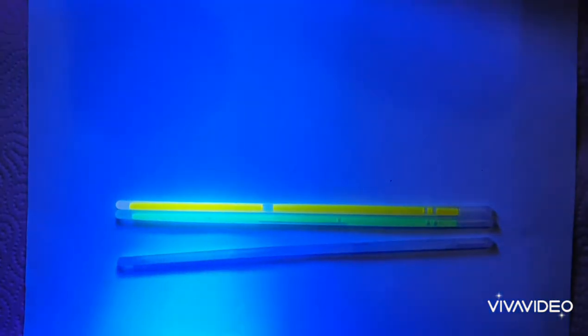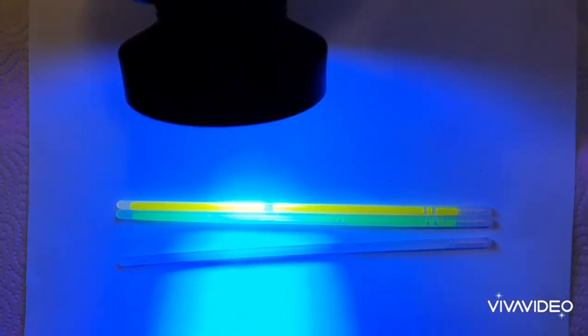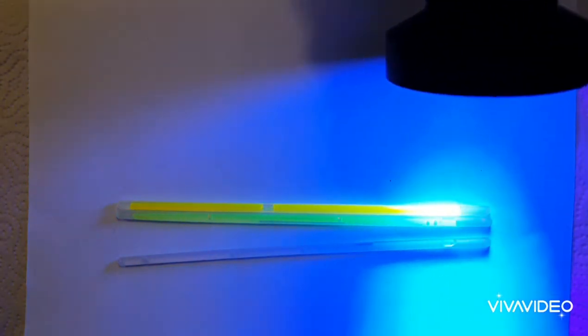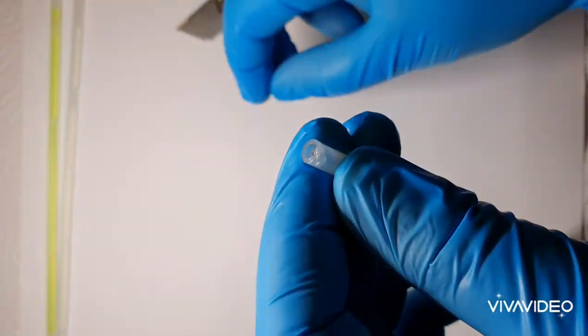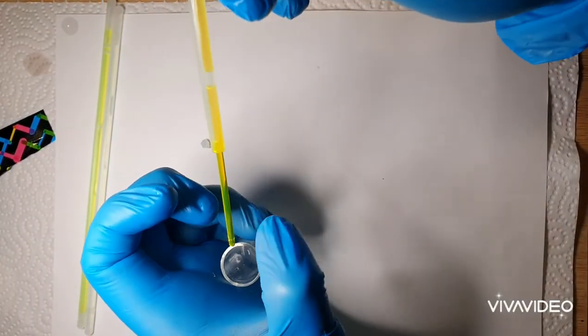The chemical reaction occurs between hydrogen peroxide and a chemical compound known as diphenyl oxalate. Glow sticks also contain a special dye that can absorb and emit energy.